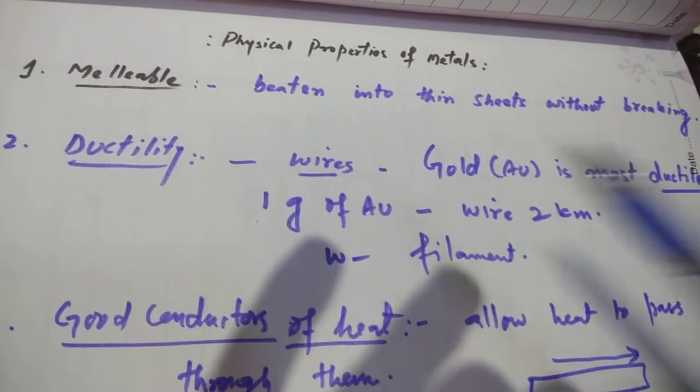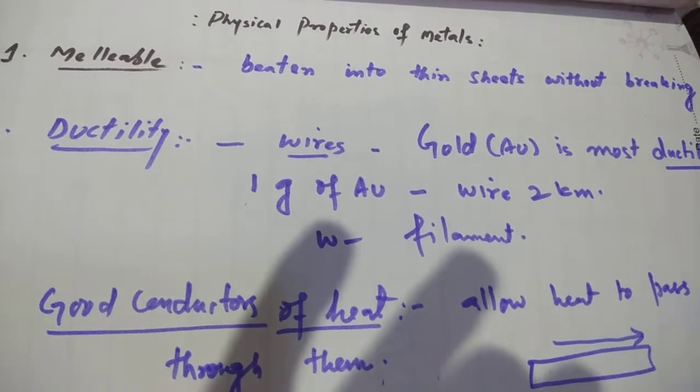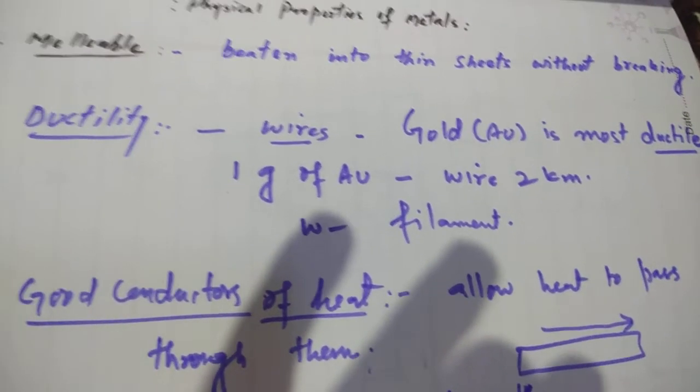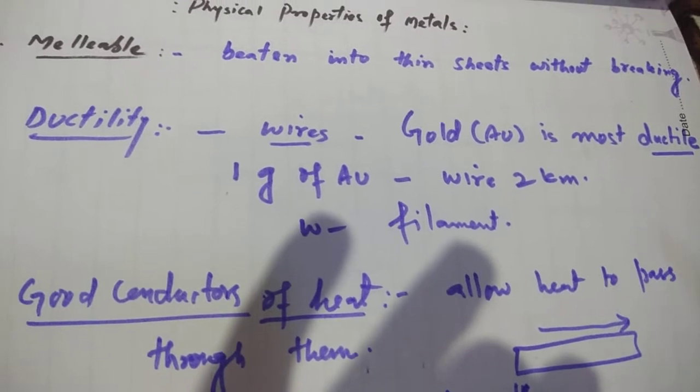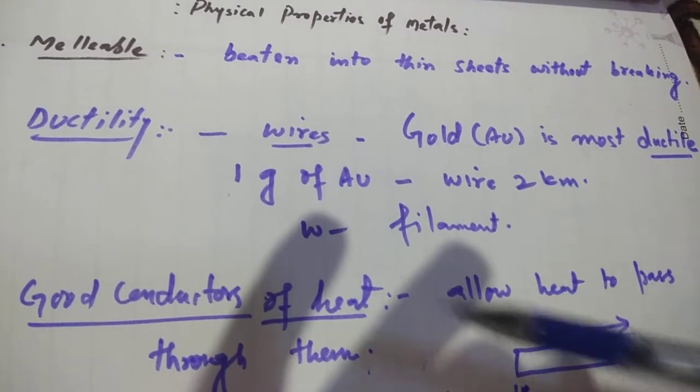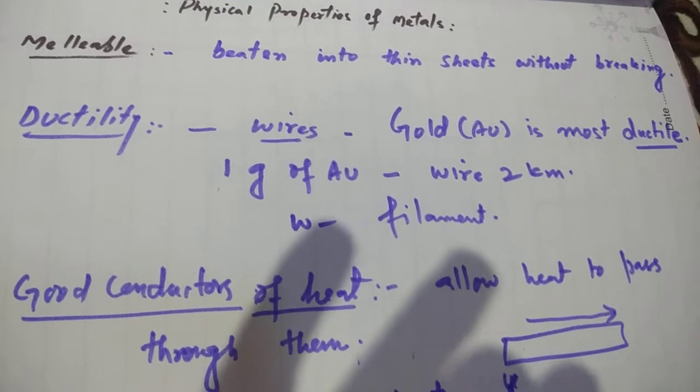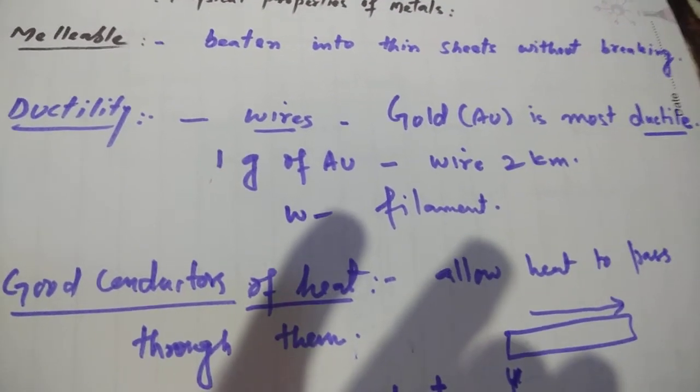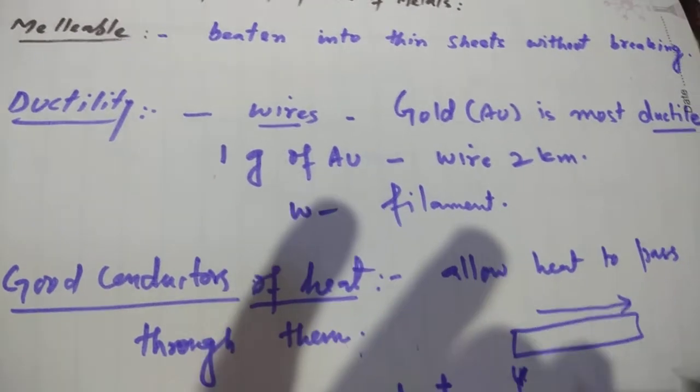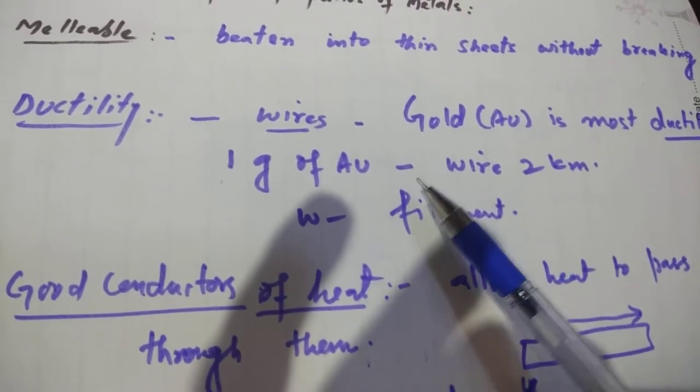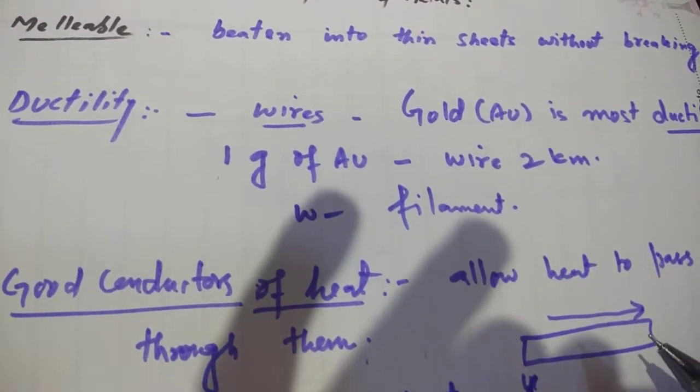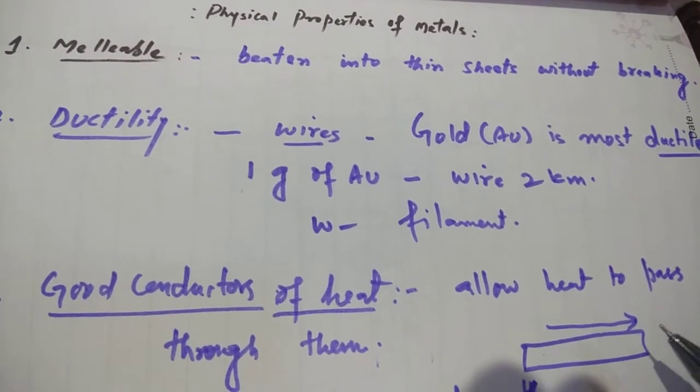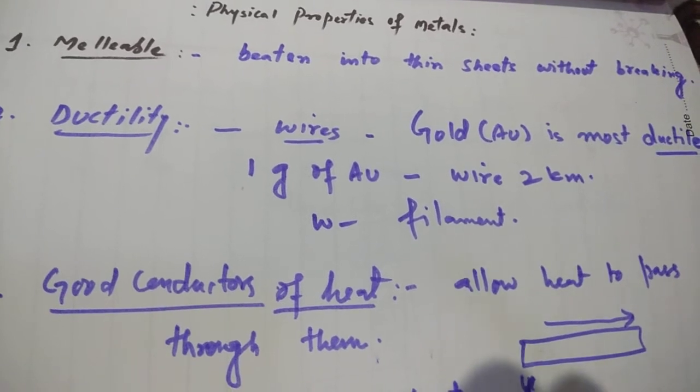The metals are highly ductile in nature. Gold is the most ductile. That is why it is used in the alpha scattering experiment. If we use 1 gram of gold, we have 2 km wire. So this gives how much it has got ductility.